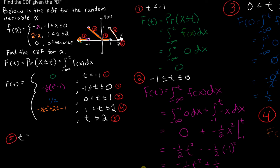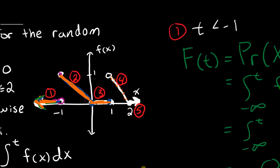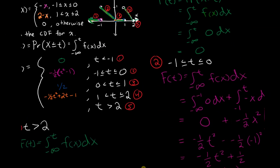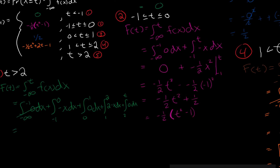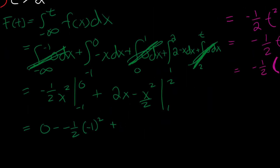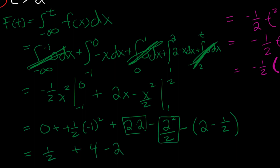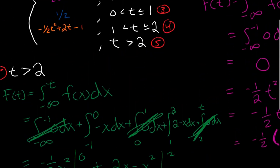Lastly, let's consider the case where t is more than 2. You should know that if we integrate any PDF from negative infinity to positive infinity, we should get 1 by definition — this is basically stating that the total probability is 1, or 100%. Let's go ahead and check. We integrate 0 from negative infinity to negative 1, then negative x from negative 1 to 0, then 0 from 0 to 1, then 2 minus x from 1 to 2, and finally 0 from 2 to t. The steps and calculations are shown here — you can slow down or pause the video to see the details. In the end, we get 1, which is awesome. The last piece of all CDFs should be 1.